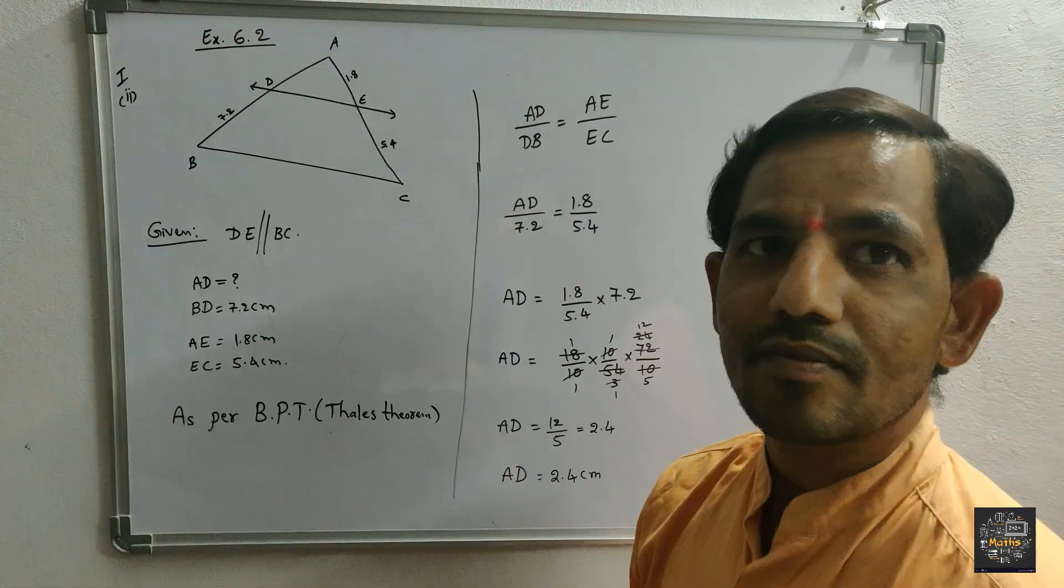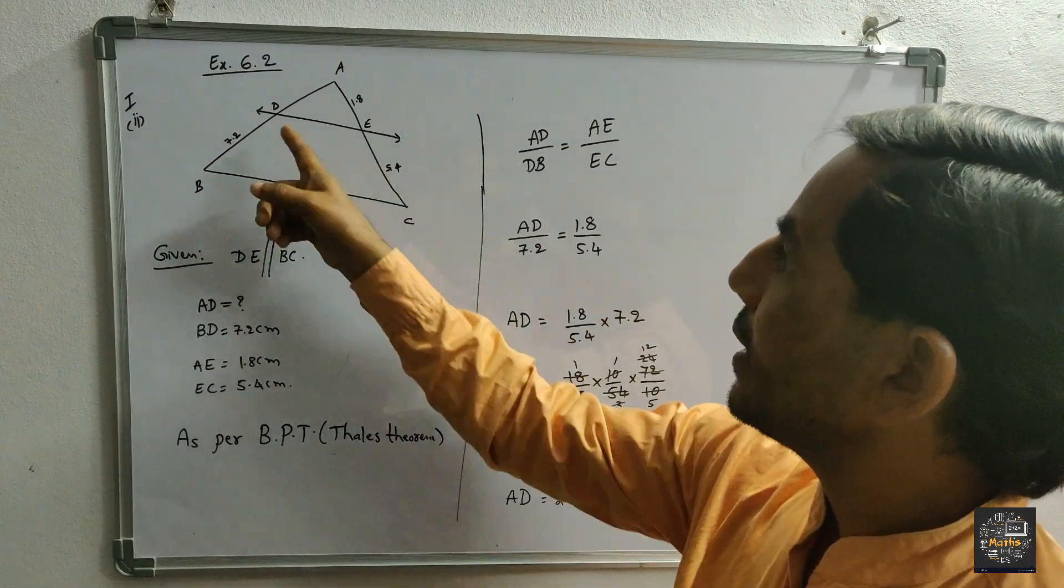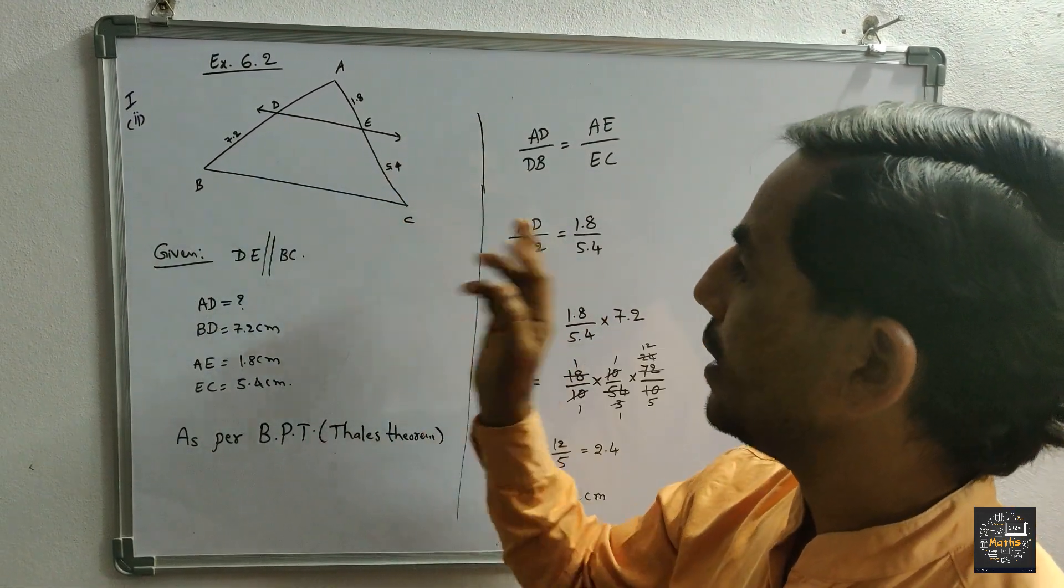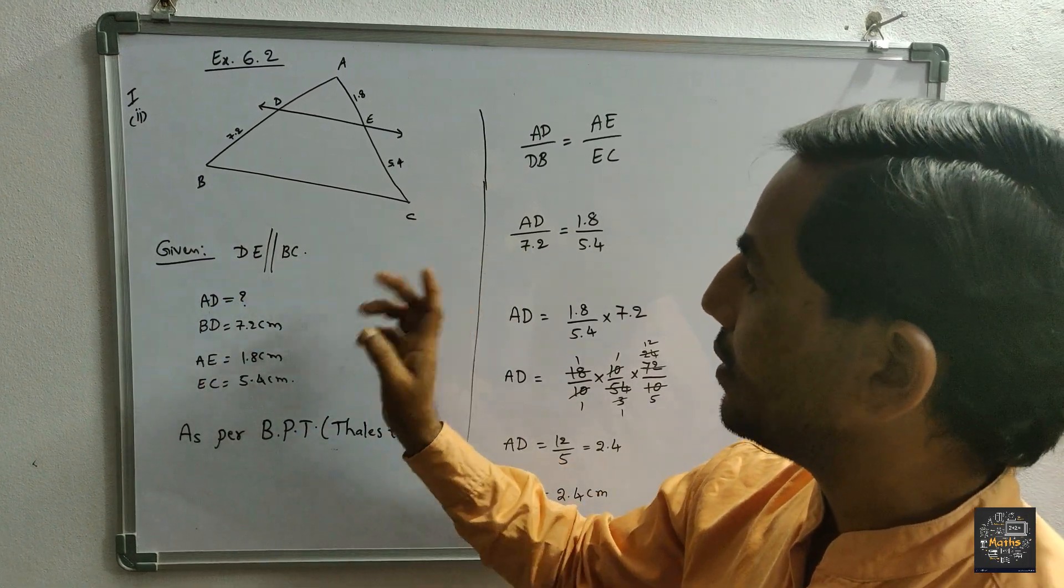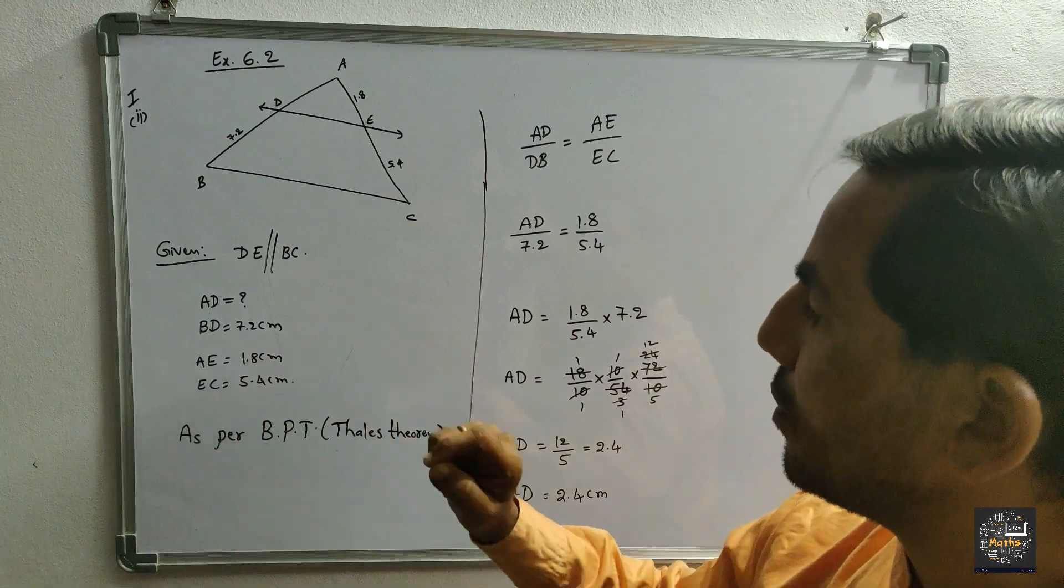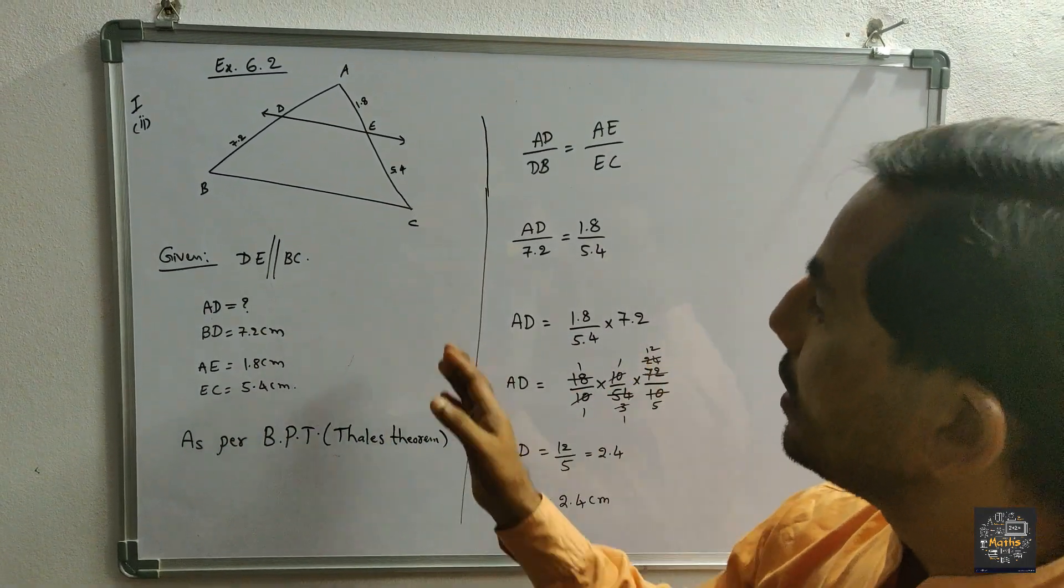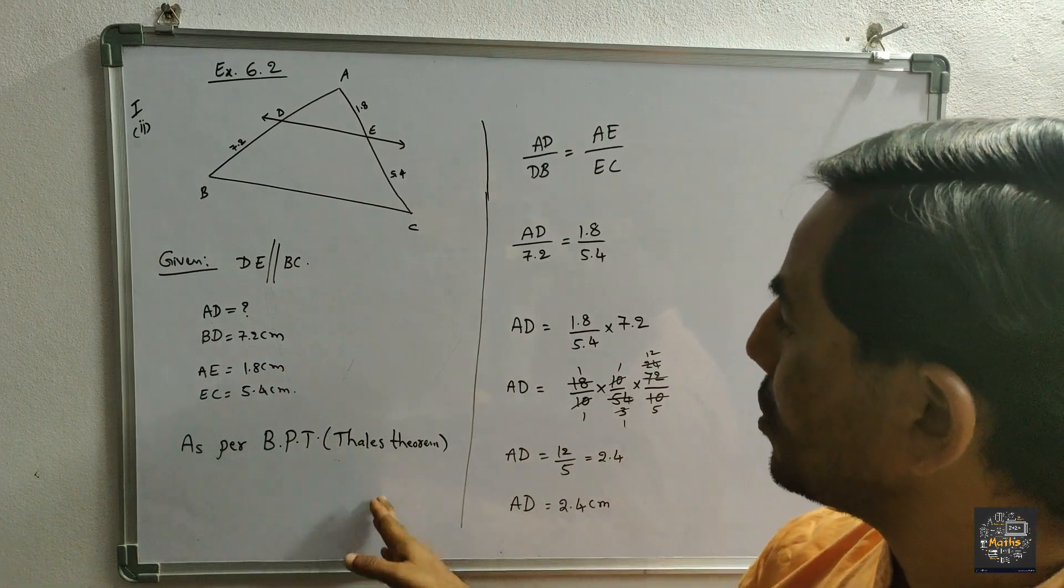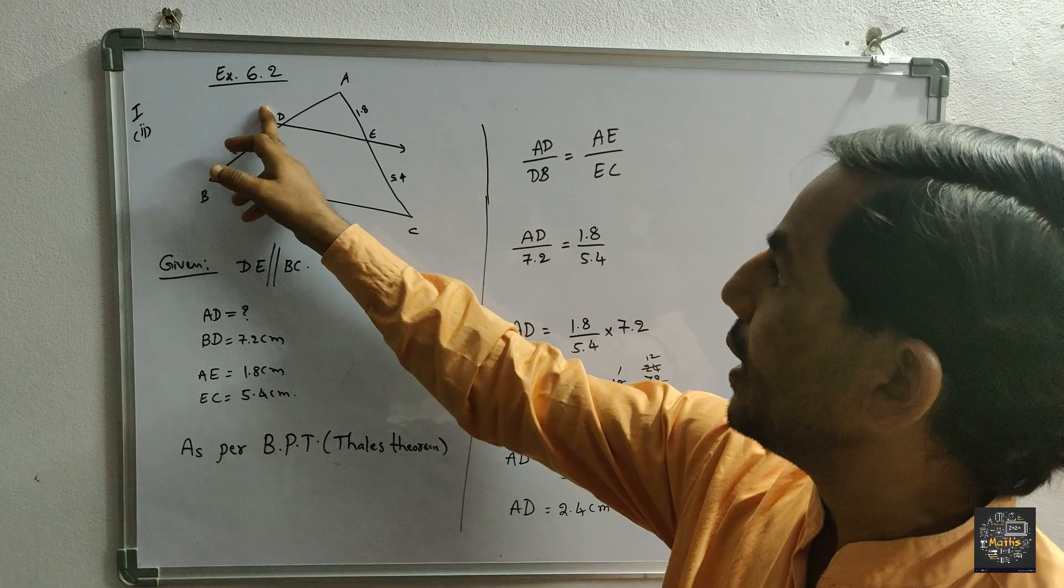Second question: ABC triangle, DE is parallel to BC, already given. AD value is required. BD is equal to 7.2 cm, AE is equal to 1.8 cm, EC is equal to 5.4 cm. Same as per basic proportionality theorem or Thales theorem, AD by DB is equal to AE by EC.